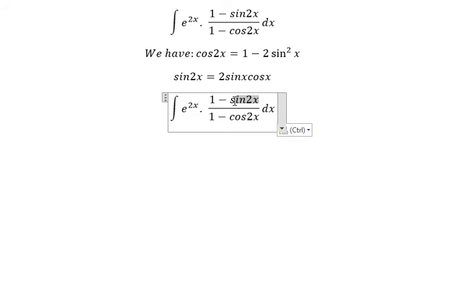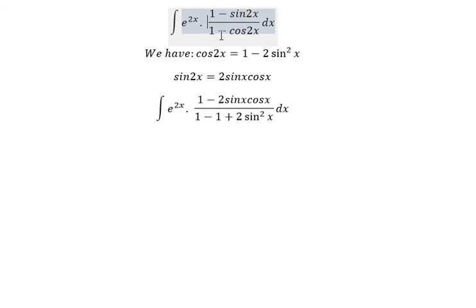This one we change for 2 sin x cos x. This one we change for this one. So you got about 1 plus 2 sin squared x because we have the negative next to cos 2x.